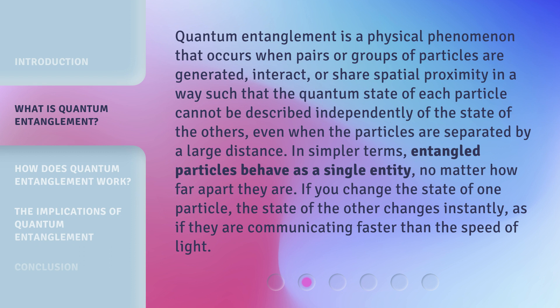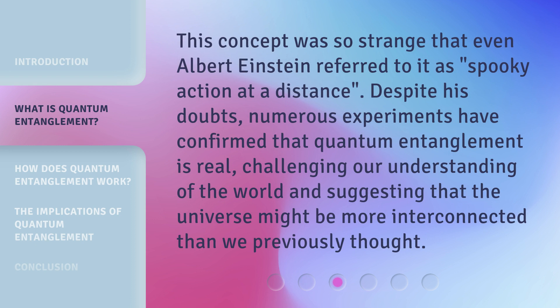Quantum entanglement is a physical phenomenon that occurs when pairs or groups of particles are generated, interact, or share spatial proximity in a way such that the quantum state of each particle cannot be described independently of the state of the others, even when the particles are separated by a large distance. In simpler terms, entangled particles behave as a single entity, no matter how far apart they are. If you change the state of one particle, the state of the other changes instantly, as if they are communicating faster than the speed of light. This concept was so strange that even Albert Einstein referred to it as "spooky action at a distance." Despite his doubts, numerous experiments have confirmed that quantum entanglement is real, challenging our understanding of the world and suggesting that the universe might be more interconnected than we previously thought.